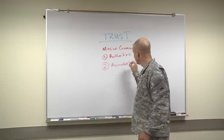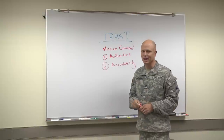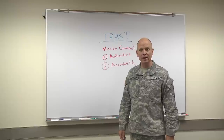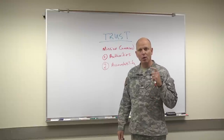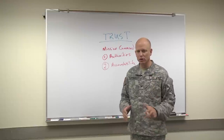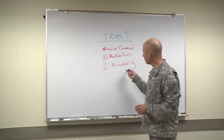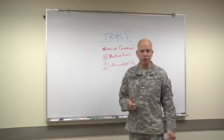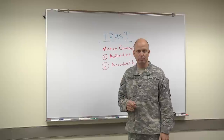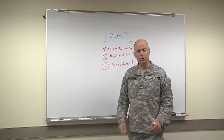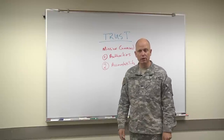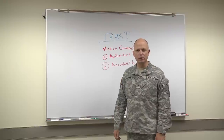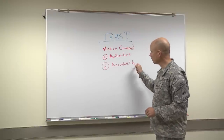Second: accountability. The hardest lesson a young lieutenant has to learn is how to look another man or woman in the eye and tell them they're not doing their job — or that they're doing a great job. That personally engaged leadership, holding people accountable — we do this through counseling statements, personal interaction, NCOERs and OERs, and mainly by enforcing the standard. We must hold people accountable.